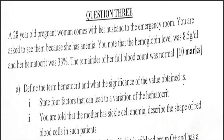Number one: a 28-year-old woman comes with her husband to the emergency room. You are asked to see them because she has anemia. You note that the hemoglobin level was 8.5 grams per deciliter and her hematocrit is 33%. The remainder of her full blood count was normal.